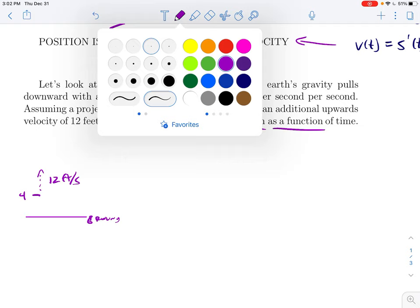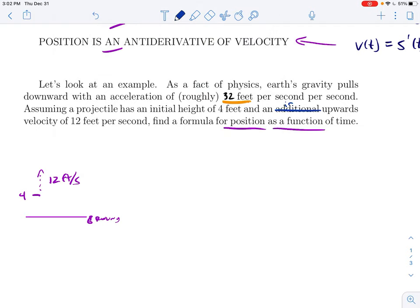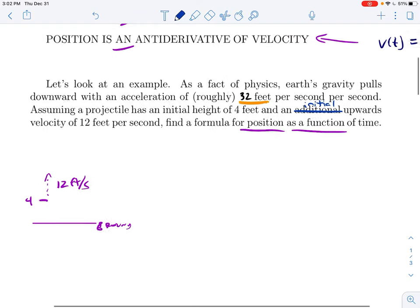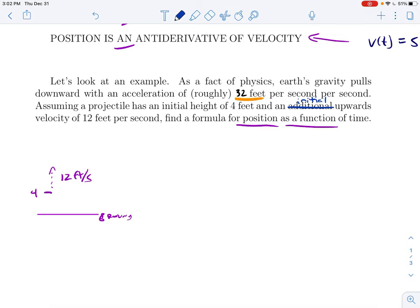So the idea is here's the ground and we're starting at a height of four and we're originally going up at a rate of 12 feet per second. Well what's this particle going to do? It's going to go up for a while, but gravity will slow it down. It slows down, slows down, and then eventually it'll fall down. So what we want to do is find a formula for position as a function of time.